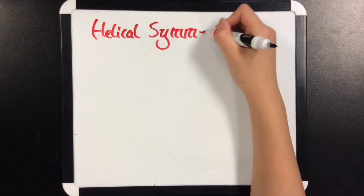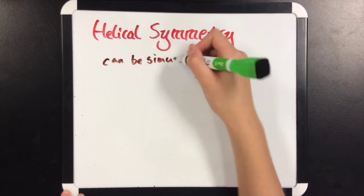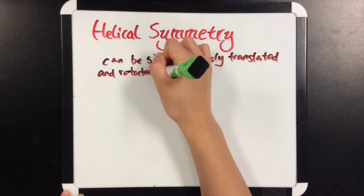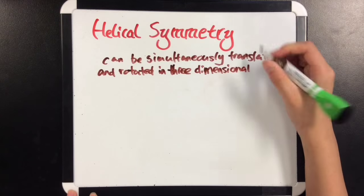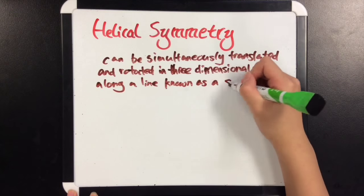And helical symmetry can be simultaneously translated and rotated in three-dimensional space along a line known as a screw axis.